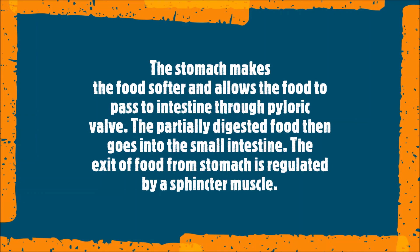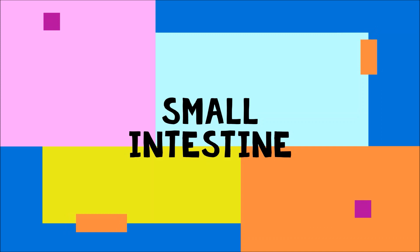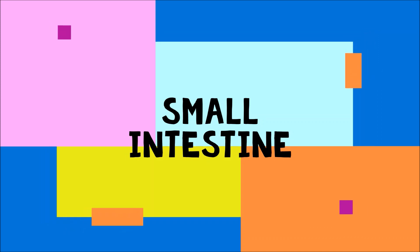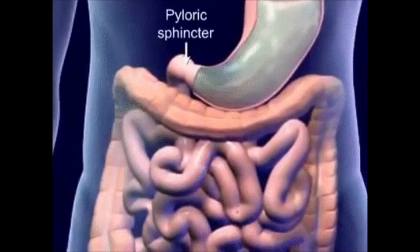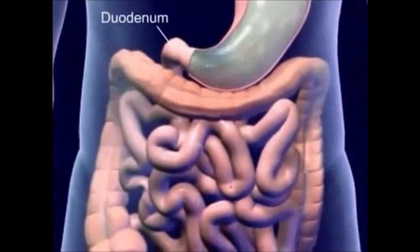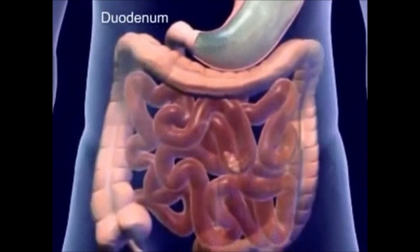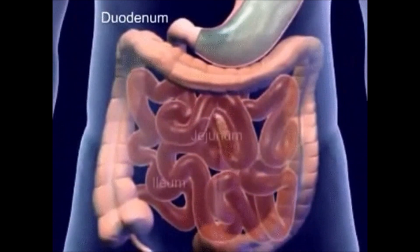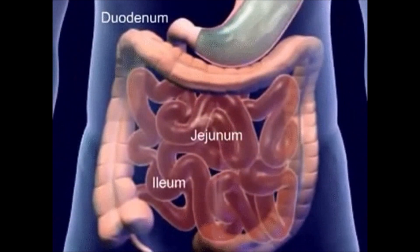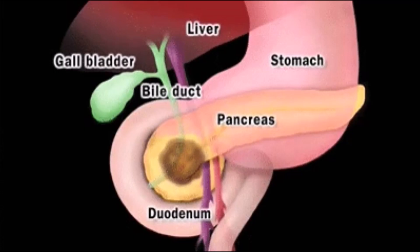The small intestine is the largest part of the alimentary canal, about 6 to 6.5 meters long in an adult. It is the site of complex digestion of food. The small intestine receives secretions from two glands: the liver and the pancreas.